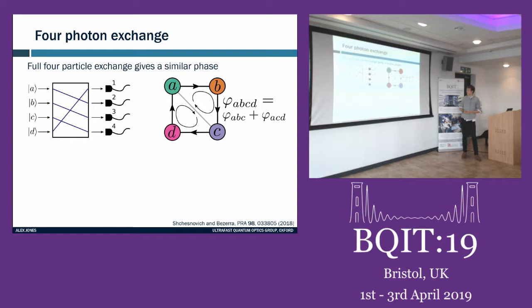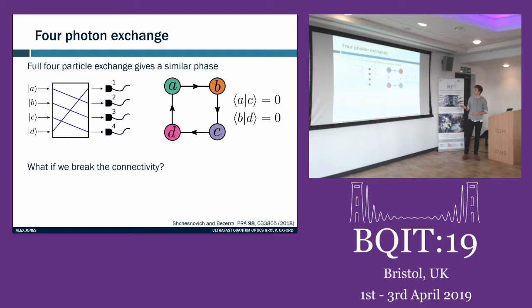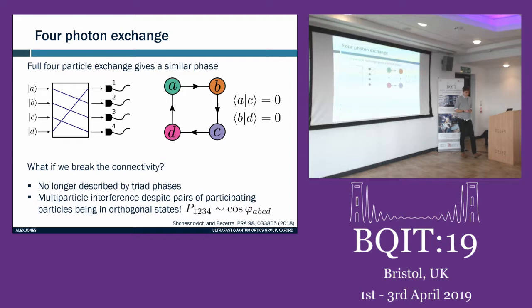A natural question is: what if we break the connectivity of this graph? Say state a and state c are orthogonal, and state b and state d are orthogonal. This means we can't decompose into triad phases, but we still have multi-photon interference — the coincidence statistics still depend on a four-particle phase. So even though intuition from Hong-Ou-Mandel would suggest no interference, multi-particle interference is actually quite different.